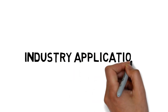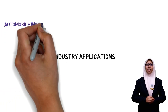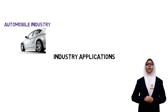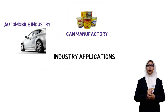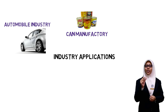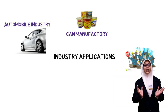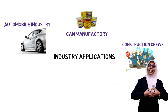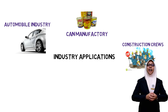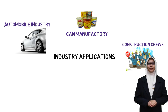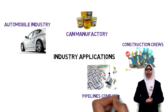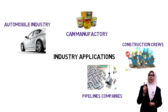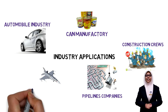The second is industry application. The automobile industry uses radiation to test the quality of steel in vehicles. Can manufacturing uses radiation to obtain the proper thickness of tin and aluminium. Construction uses radiation to gauge the density of road surfaces and sub-surfaces. Pipeline companies use it to look for defects. Aircraft manufacturing uses it to check for flaws in jet engines.